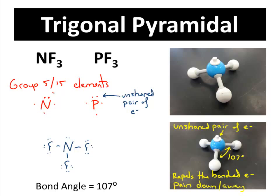Trigonal pyramidal is another shape very similar to trigonal planar. The big difference is that on these elements you're going to have an unshared pair of electrons. That unshared pair of electrons on these group 5 or 15 elements is going to repel — it's going to repel the bonded electron pairs downward. This little nub on a model represents an electron pair. Either phosphorus or nitrogen could be the central atom in a trigonal pyramidal situation, with three fluorines, iodines, or chlorines on the outside. If you have three atoms around it with this unshared pair of electrons, you'll end up with a trigonal pyramidal shape.